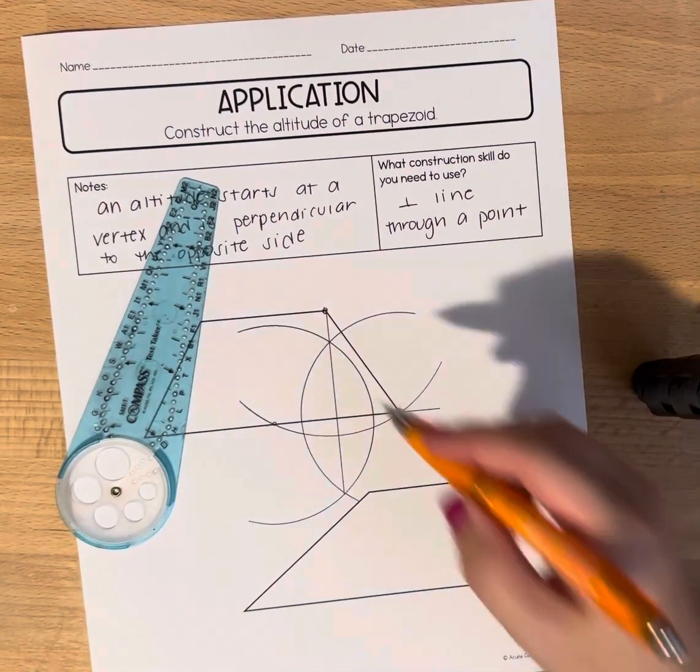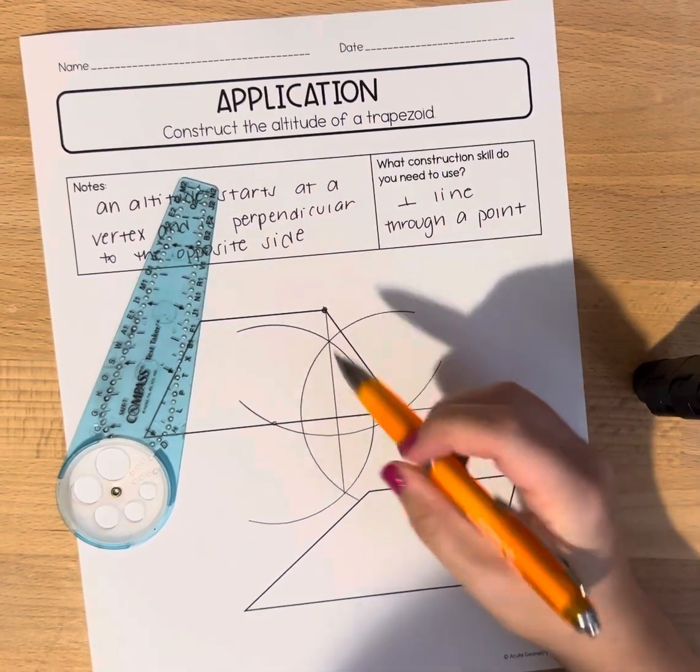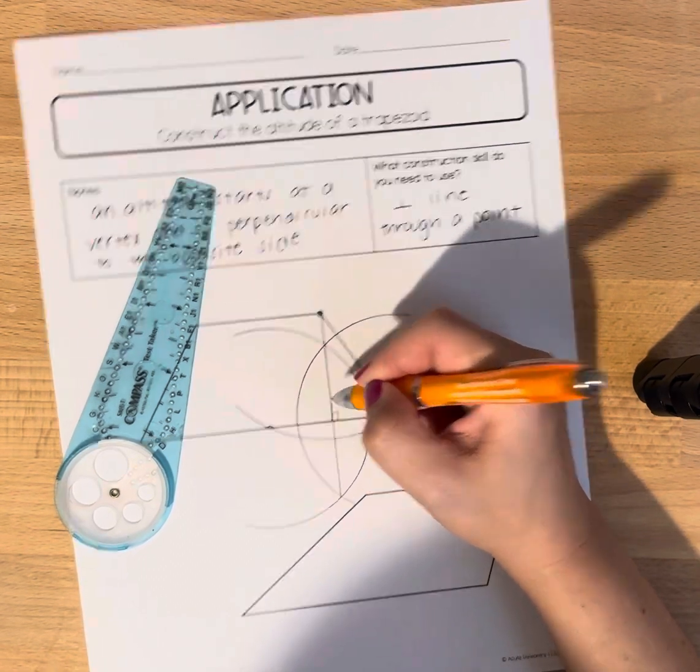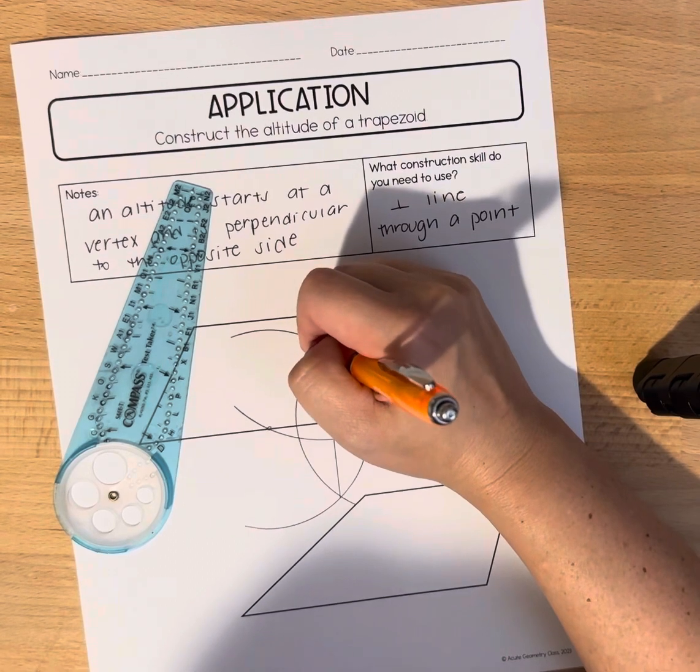So the altitude of our trapezoid is the line segment that goes from the vertex and is perpendicular to the opposite side. So it's this line segment in here that I'm tracing over and I'm just going to label it in my picture as the altitude.